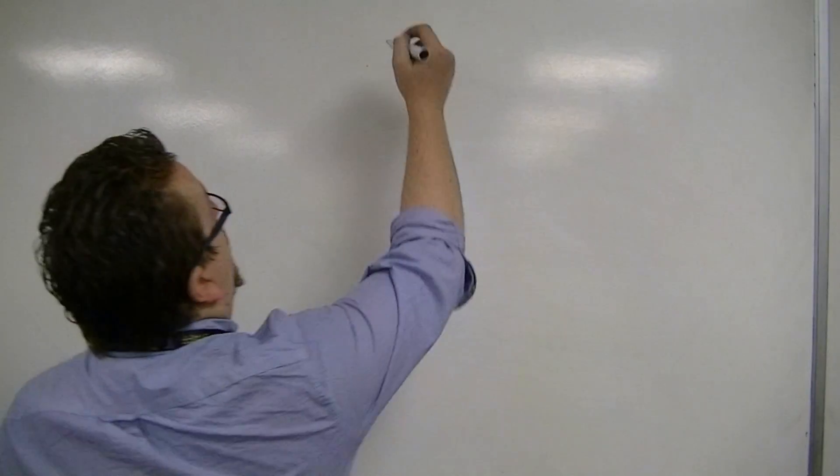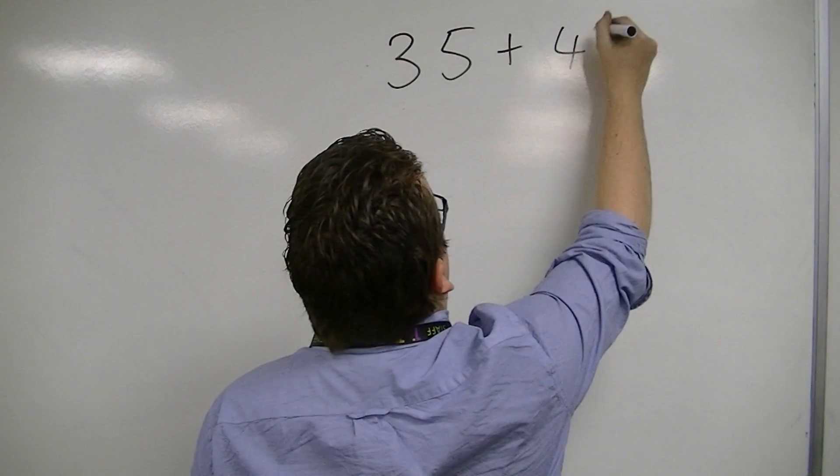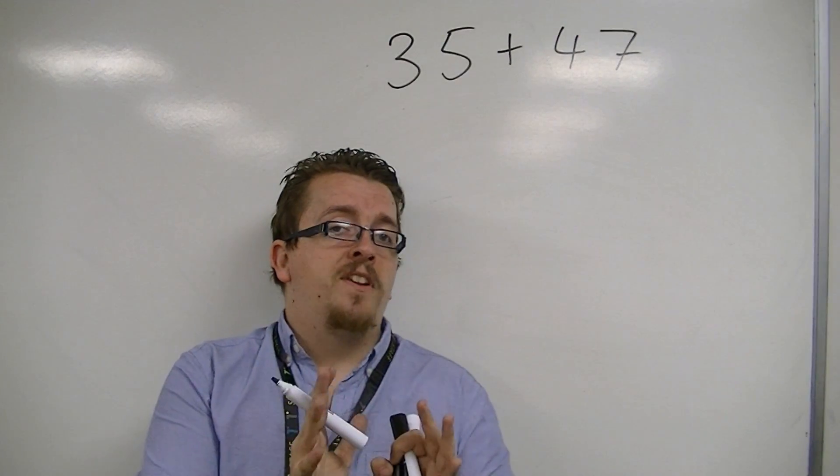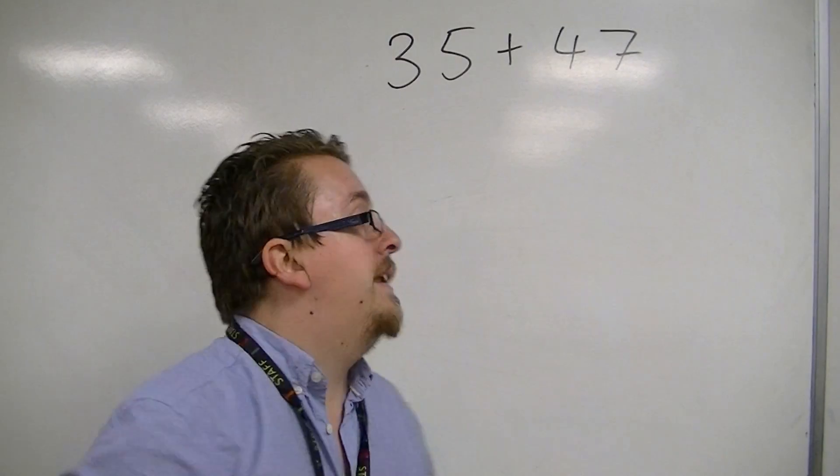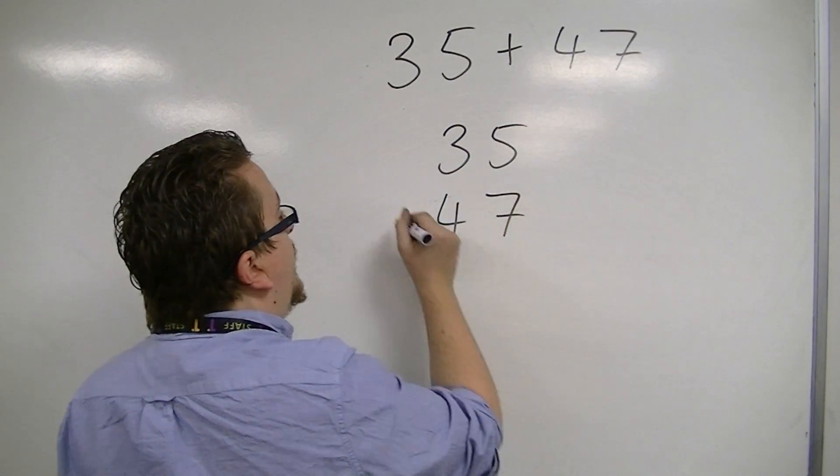So if you've got the numbers 35 plus 47, for example, then what you want to do is line up those numbers in place value. So 35 and 47.